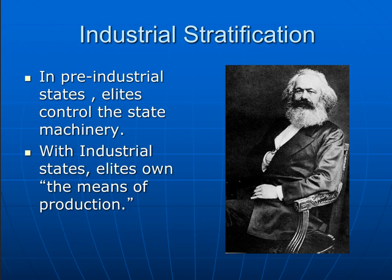The communist rally points to awareness of what Karl Marx called industrial stratification or class struggle. According to Marx, in pre-industrial states elites controlled the estate machinery. With industrial states, elites own the means of production — and by means of production, Marx meant property, factory buildings, machines, materials used in production, and capital, that is, the funds used to purchase the means of production.